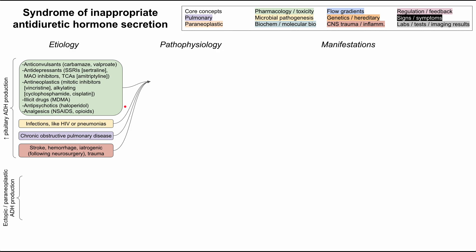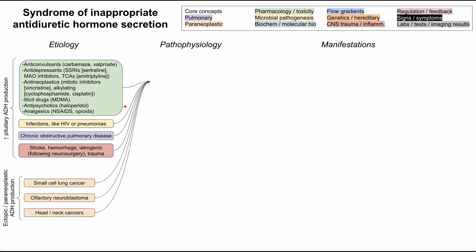The ectopic paraneoplastic causes are essentially all cancer etiologies. Small cell lung cancer is the most common and probably the most well-known cancer association with SIADH. The others include head and neck cancers and olfactory neuroblastoma.